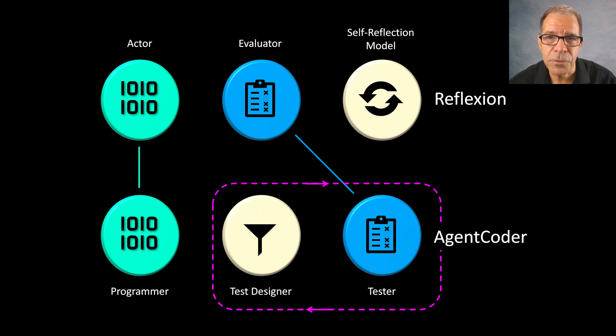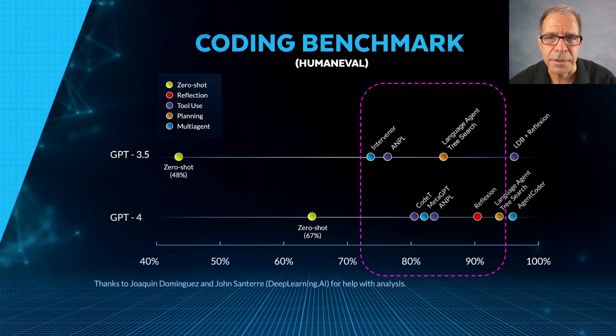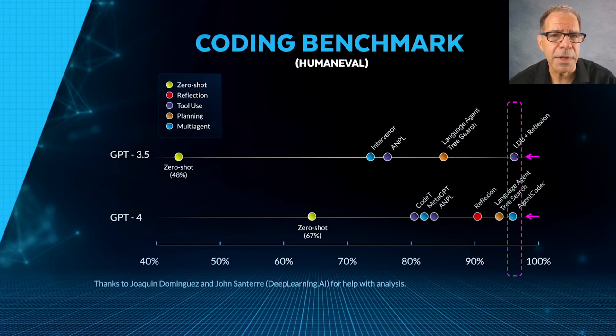Of course, other frameworks were tested as well, as you can see. I simply focused on the top-ranked one for each GPT model. And as you can see, Agent Coder and Reflection were in a dead heat for first place across the two models.